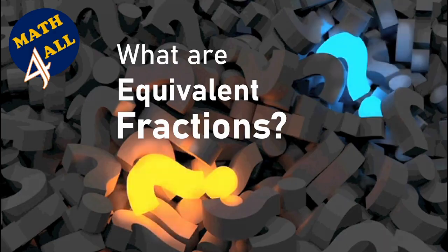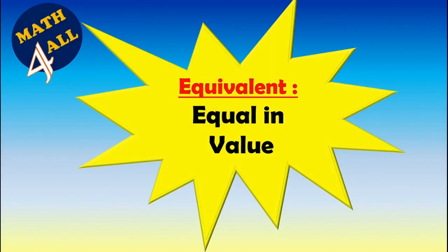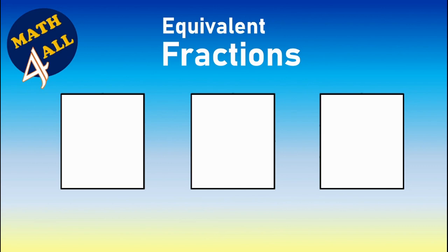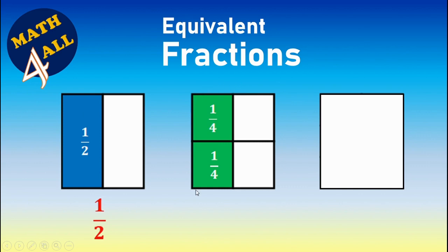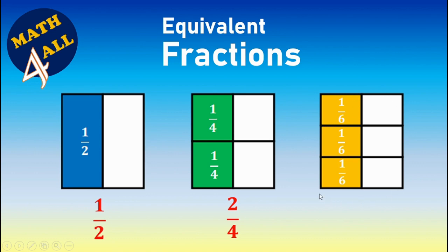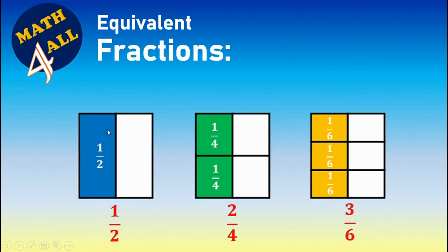Equivalent means equal in value. For example, if you have three rectangles that are exactly the same size: in the first, divide it into two equal parts — you have one half. In the second, cut it into four equal parts — you have two over four. In the third, cut it into six equal parts — each part equals one sixth, so it will be three over six.